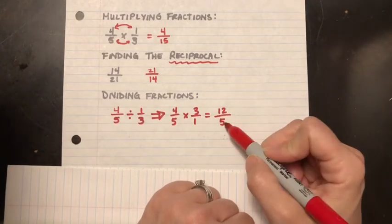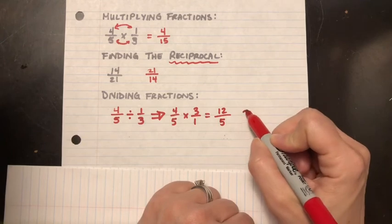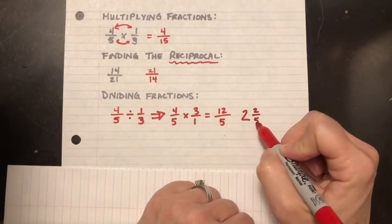Let's just do that for fun because it's always good to practice turning that into a mixed. How many fives can I take out of 12? I think I can take two. So I take two whole numbers out—that's worth 10. That's going to leave me with 2 fifths, and that's now lowest terms.